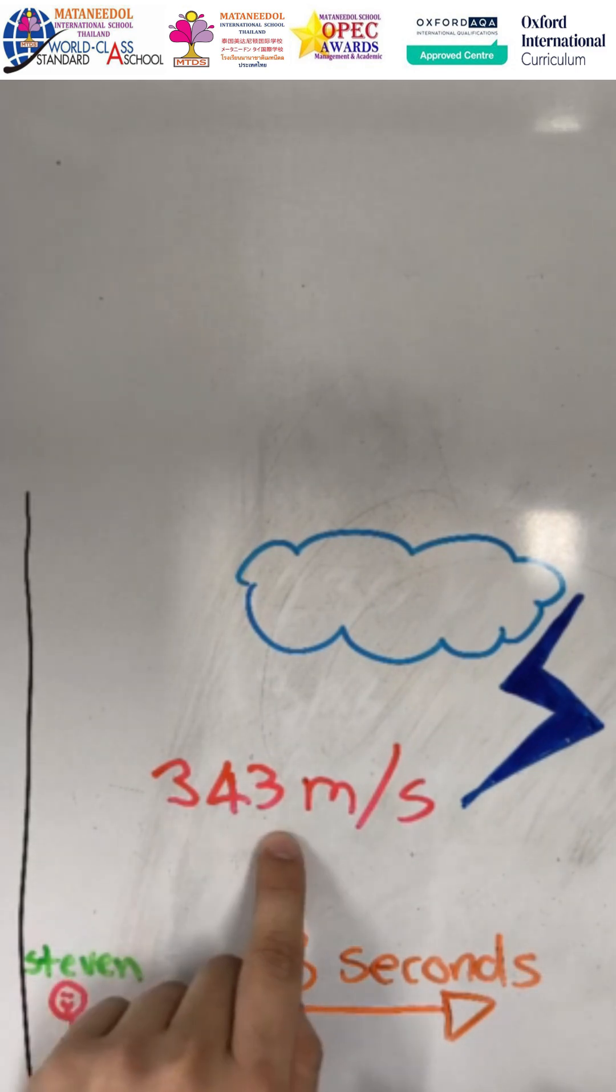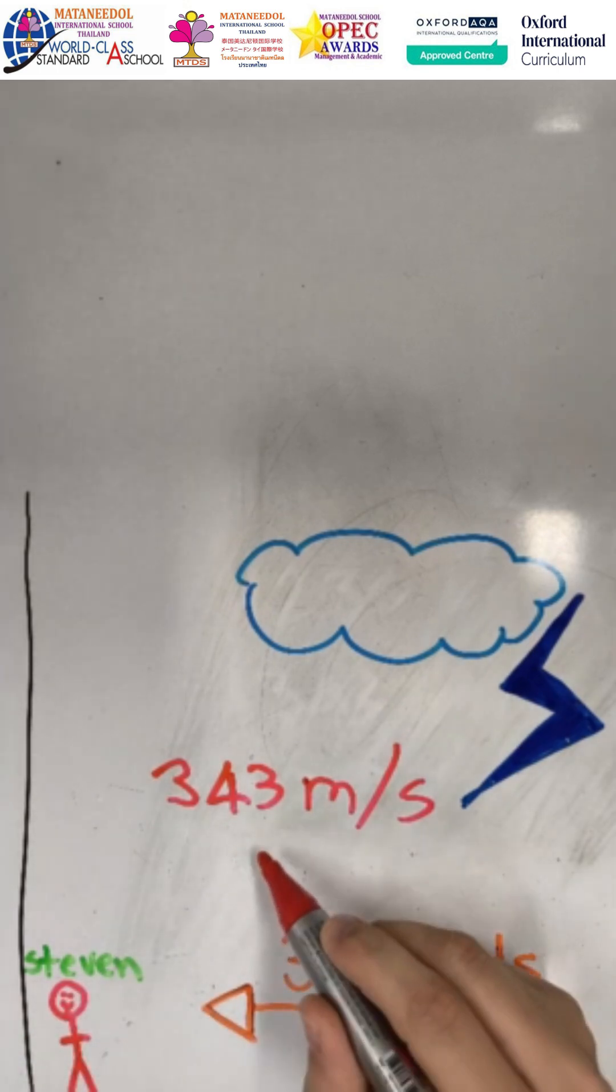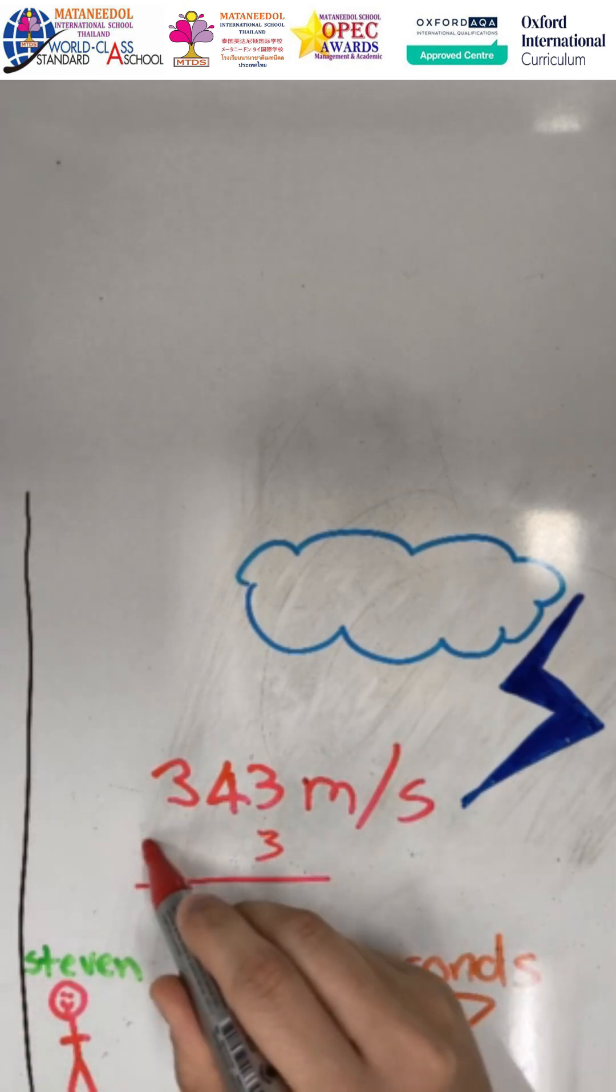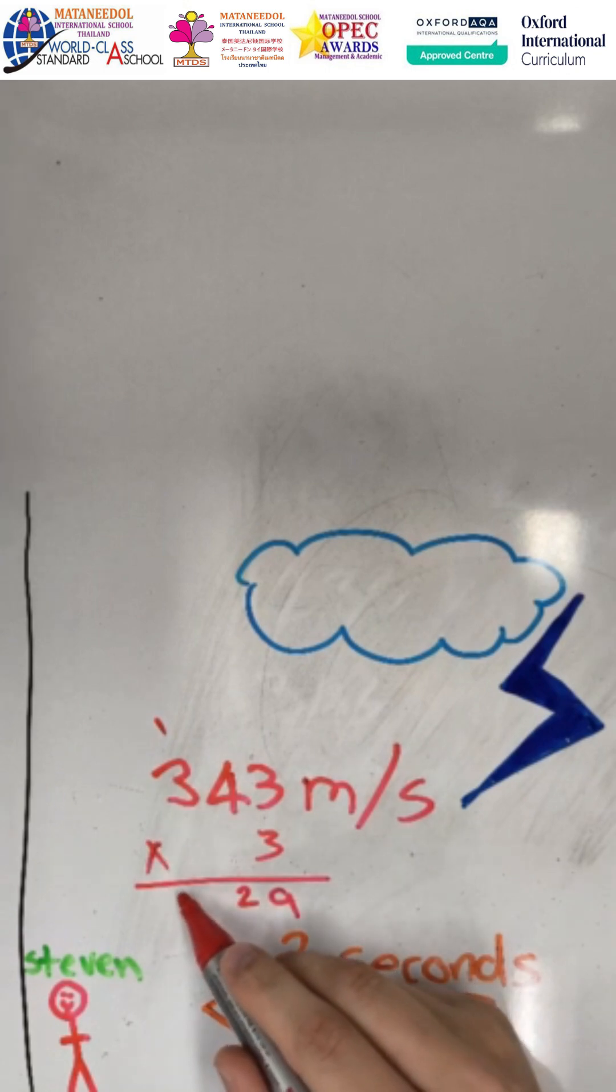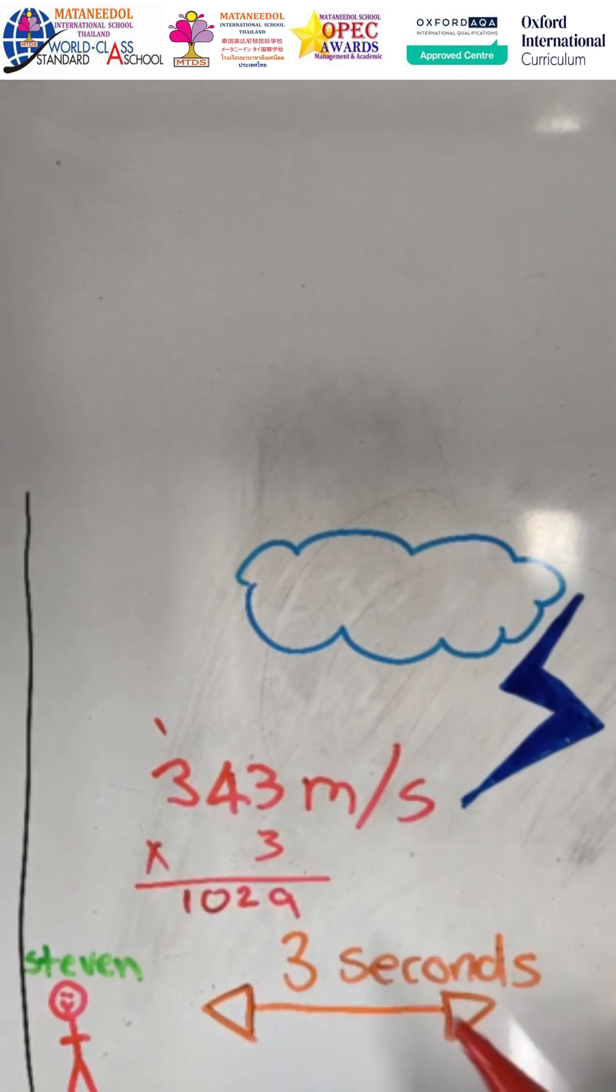So we have three seconds over here. So what we have to do is we multiply this number by three, right? Let's take a look. Three times three is nine. Three times four is 12. Three times three is nine plus one is 10.